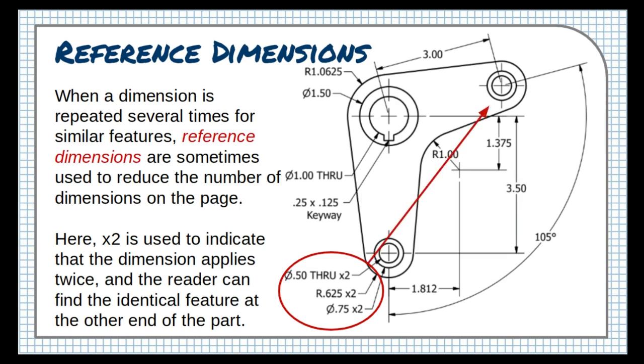In other situations, the abbreviation TYP for typical is used to indicate that a dimension applies to the entire part, such as a fillet that uses the same internal radius on all edges of the part.